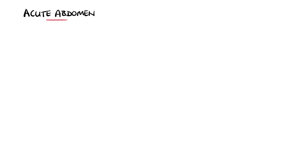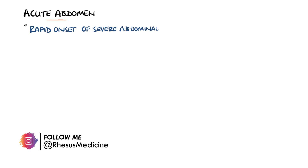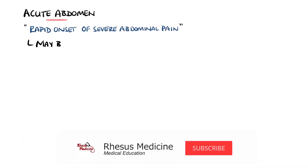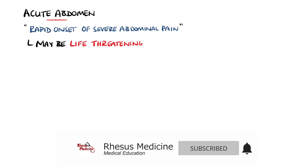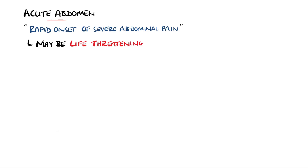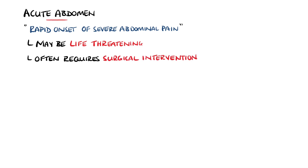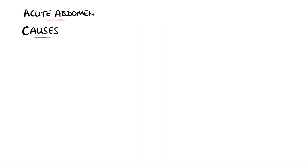Abdominal pain is a common medical complaint, while acute abdomen is a term used when there is a rapid onset of severe abdominal pain that can indicate a life-threatening underlying cause. There are many different causes of an acute abdomen, therefore it is important to focus on the urgent causes that need immediate intervention.